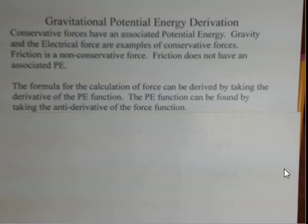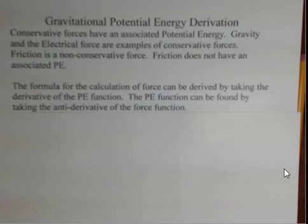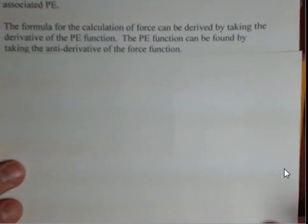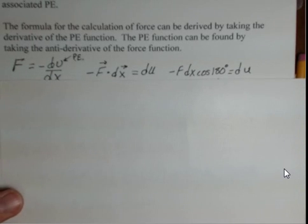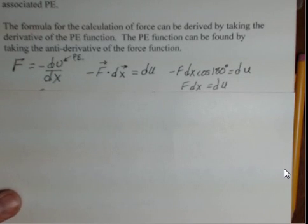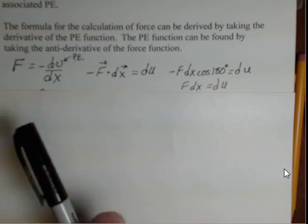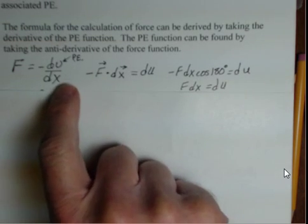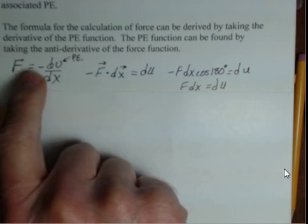In general, if you have a conservative force — such as gravity or the force of a spring, not friction — that force has an associated potential energy. Electrical force as well has a potential energy. We're going to use the connection between force and potential energy to come up with an expression for the gravitational potential energy. If we have an expression for the potential energy as a function of x, we could take the derivative of that, apply a minus sign in front, and we would have the force expression.